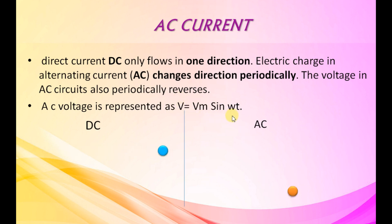Vm is the maximum value of alternating voltage. Omega t is the angle of that wave at time period t.